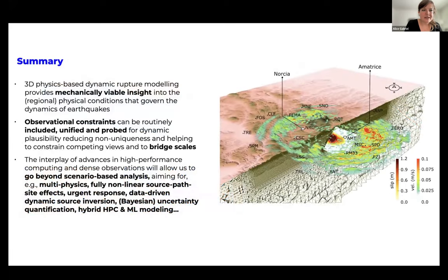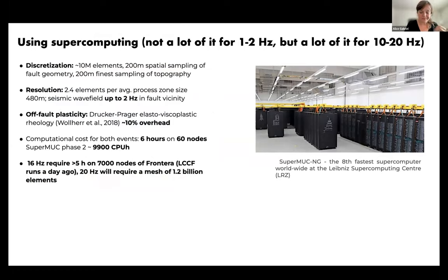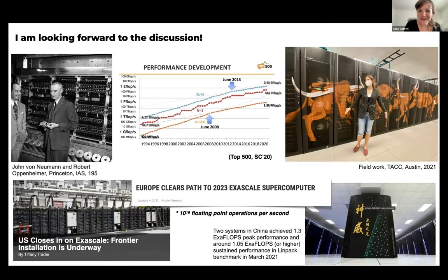These physics-based 3D models use supercomputing, but to run them up to 1–2 Hz only requires roughly 10,000 CPU hours. However, going to higher frequencies increases computational cost enormously — for example, running the same simulation targeting 16–20 Hz on Frontera requires using almost the entire machine. We are on the road to having these huge computers available to us.